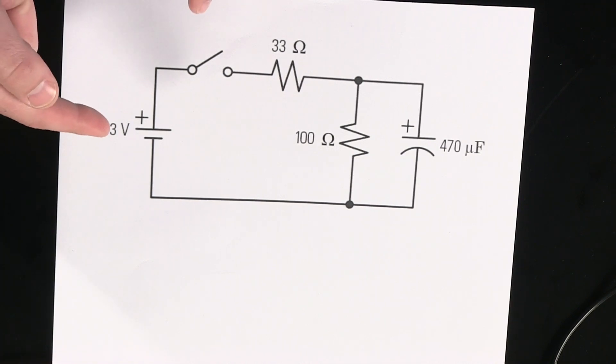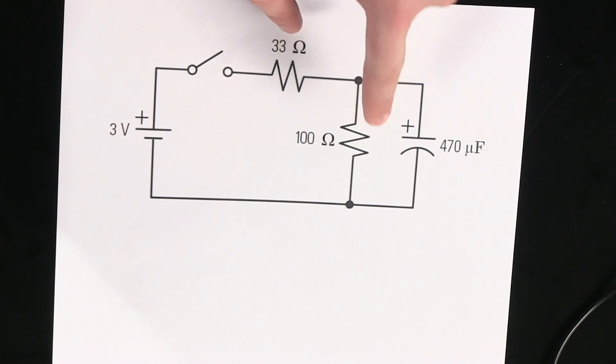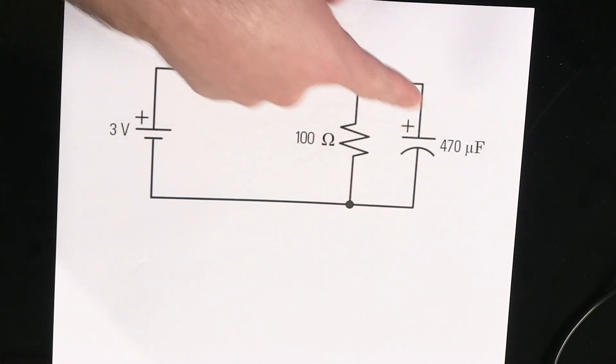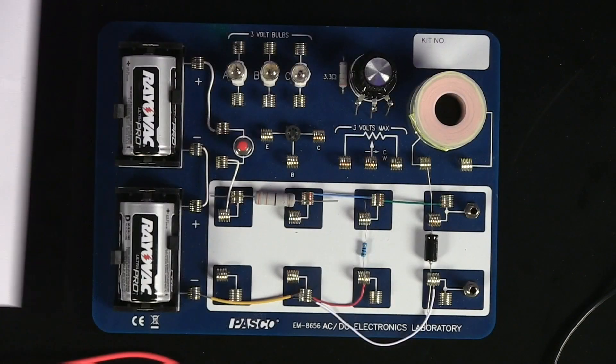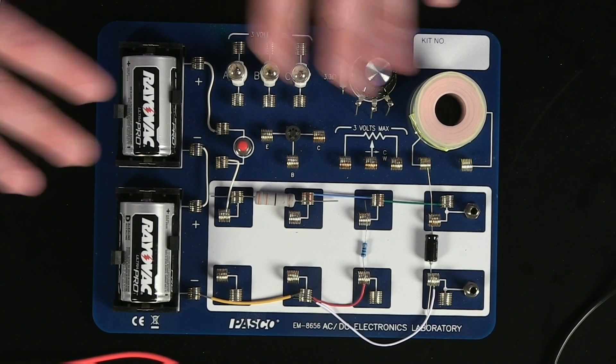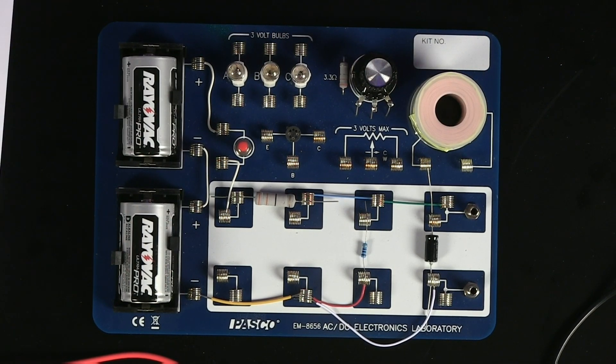And so there's a 3-volt battery source here, a switch, a couple of resistors. One is in series with the capacitor, and one is parallel with the capacitor. Let me explain how that sort of shakes out on our circuit board here.